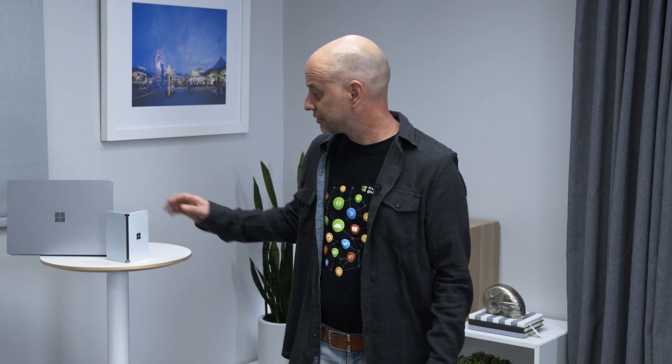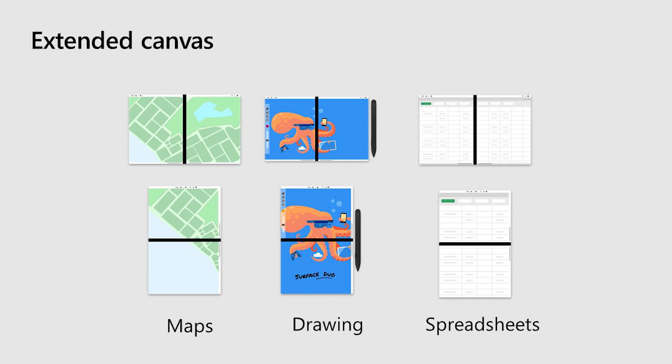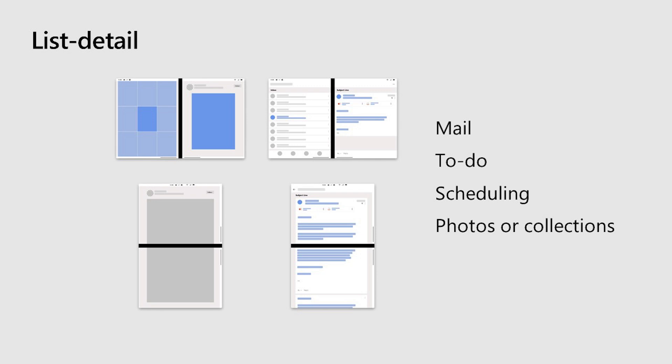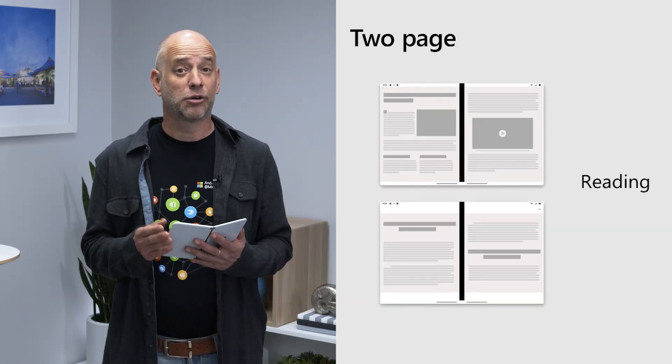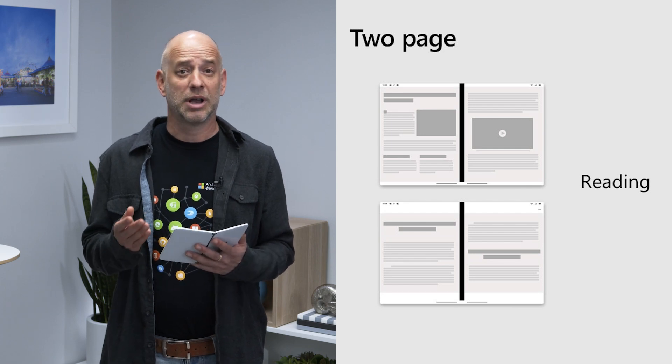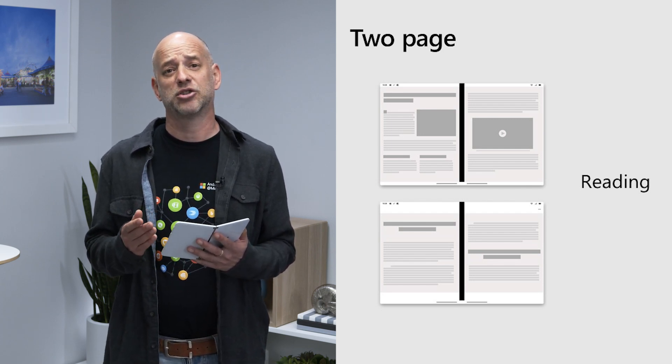Let's look at some of these design patterns. Extended canvas is one big layout spanned across both screens. Use this pattern to get more screen real estate and present more content to your users. This can be great for showing images, map, zooming in and out of large canvases, and great for drawing or viewing spreadsheets. List detail can be great for fast email browsing, showing search results, or other specific details on the other screen. Two-page can come in handy for a reading mode such as a book, a magazine reading app, or just for presenting long pageable content.